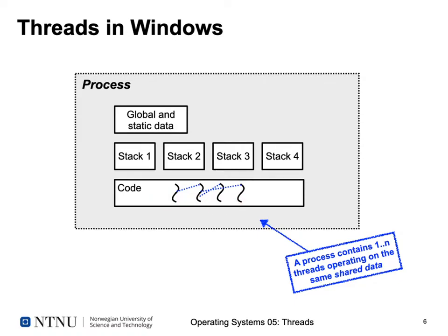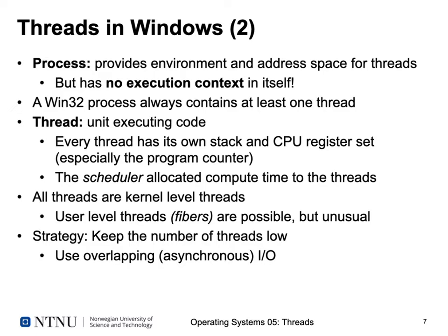Threads are an intrinsic part of the execution context of a Windows process. A process must contain at least one thread and can contain multiple threads. Each thread shares global and static data (BSS and data segments) and the same code segment, but runs at different locations in the code and has its own processor stack. A Windows process provides an environment and address space for threads, but the process itself has no execution context — it needs a thread.